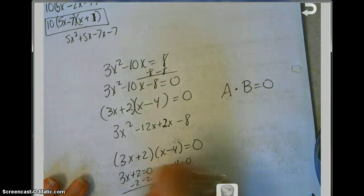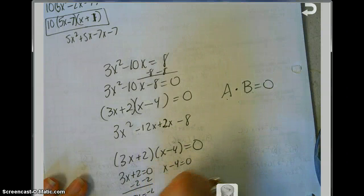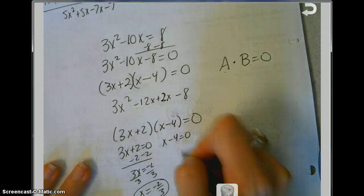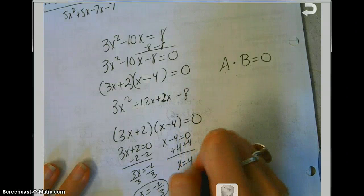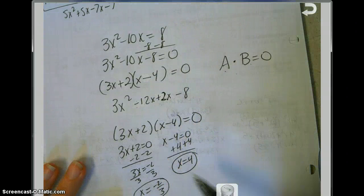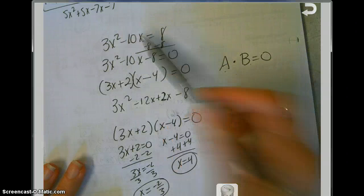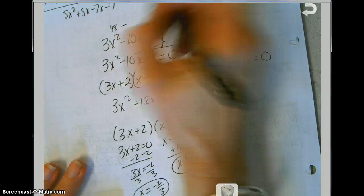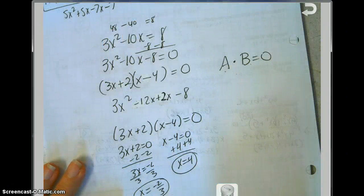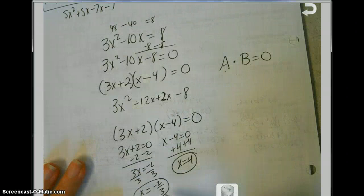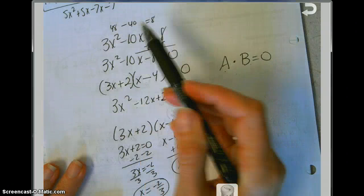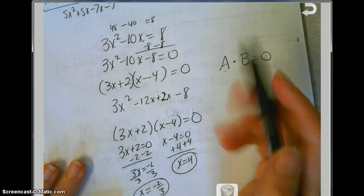You solve both factors. 3x plus 2 equals 0 gives 3x equals negative 2, so x equals negative 2 thirds. The other factor gives x equals 4. If you plug in 4: 4 squared is 16, times 3 is 48; 48 minus 10 times 4 is 40; 48 minus 40 equals 8. That checks out. You could also try negative 2 thirds — square it, multiply by 3, subtract 10 times it, and you should also get 8. So both x equals negative 2 thirds and x equals 4 are your answers.